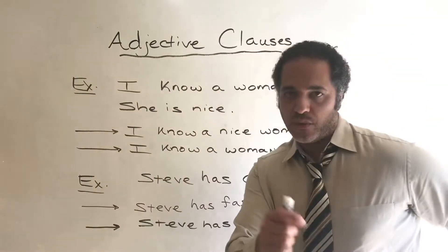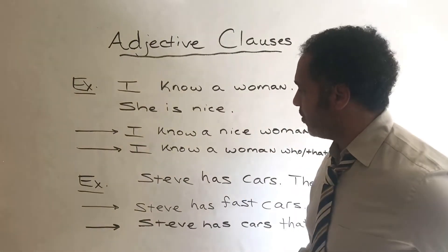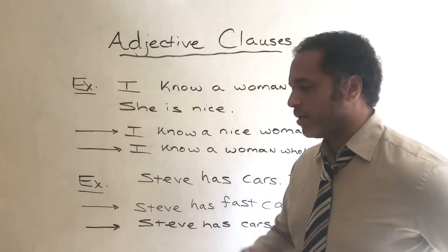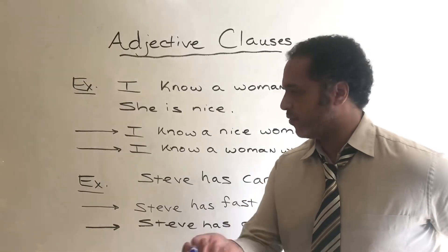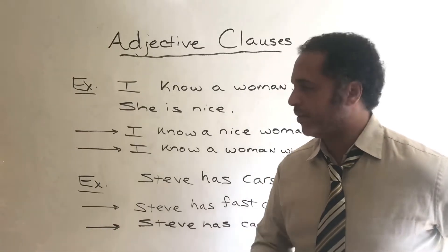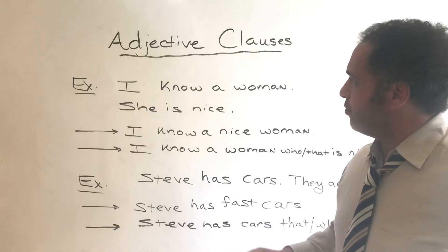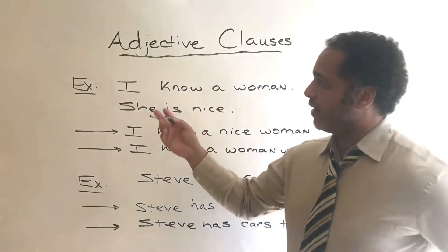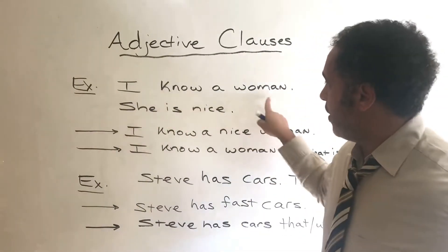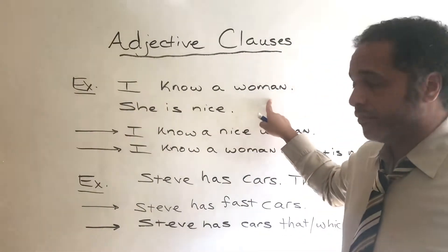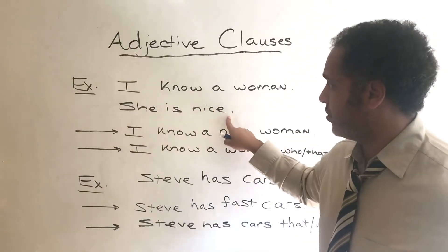These are the examples I have on the board, and I'm going to show quite a few more a little bit later. Let's take a look at this one here. So let's say that I have two sentences: 'I know a woman.' 'She is nice.'